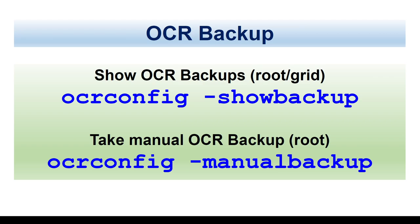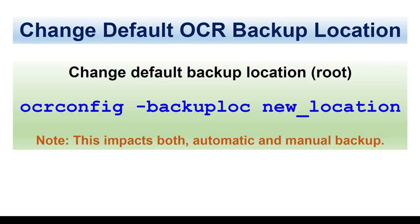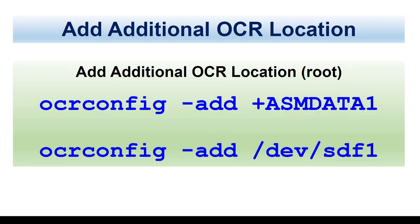By default, Oracle cluster takes the OCR backups every four hours, every day, every week. You can take a manual backup if you need one. By default, the backup config location is configured. If you want to change it, you can use OCR config backup location with the new location. This will control all new backups — either automatic or manual — so all new backups will go to the new location. Existing backups will stay where they are; this command will not touch existing backups.